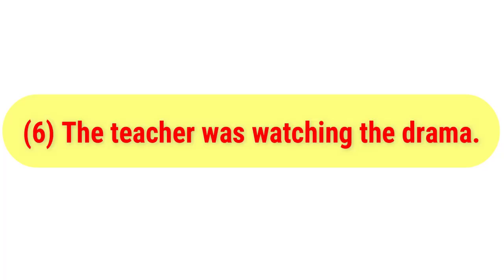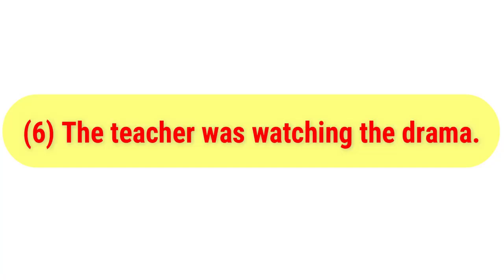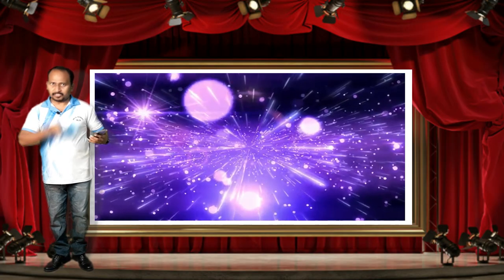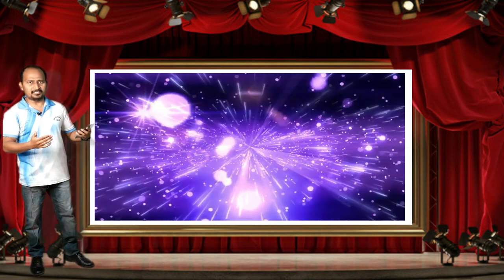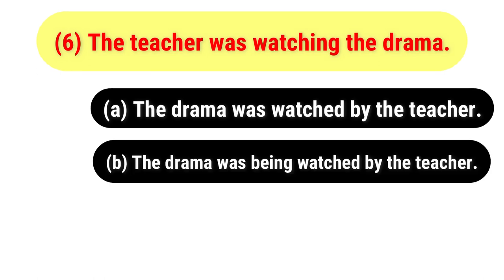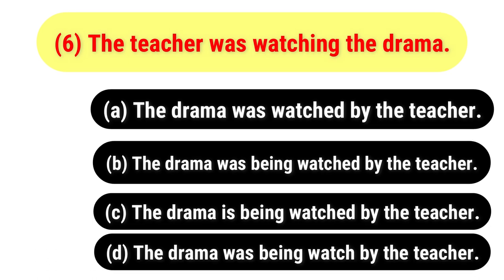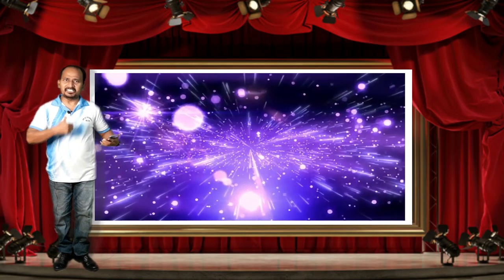Question six is in active voice: 'The teacher was watching the drama.' You have to change it to passive voice. The options are: A) The drama was watched by the teacher; B) The drama was being watched by the teacher; C) The drama is being watched by the teacher; D) The drama was being watched by the teacher. Your time begins now.